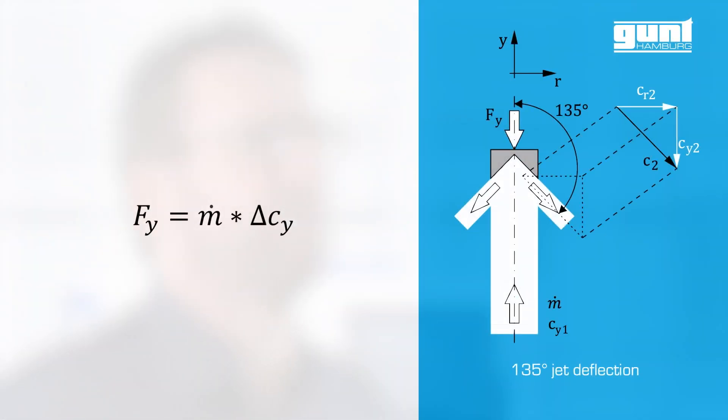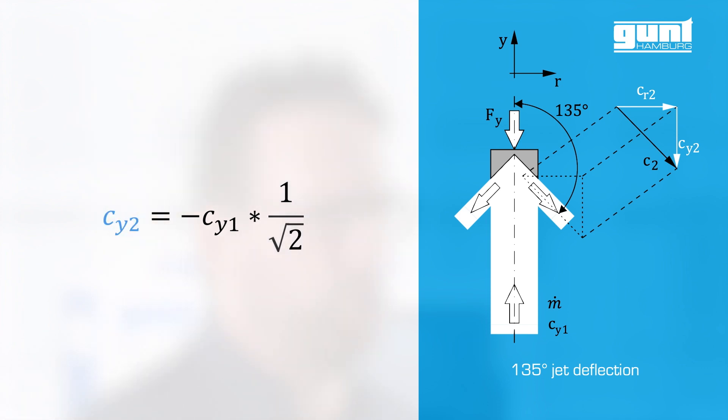As always the force in y direction F_y is calculated as mass flow times change in velocity ΔC_y or C_y1 minus C_y2. C_y1 is a known quantity because we are measuring the flow rate. Assuming perfectly true deflection without losses C_y2 can be expressed as minus C_y1, careful negative because it's pointing downward, times 1 divided by square root of 2. F_y now becomes mass flow times C_y1 times this factor here.